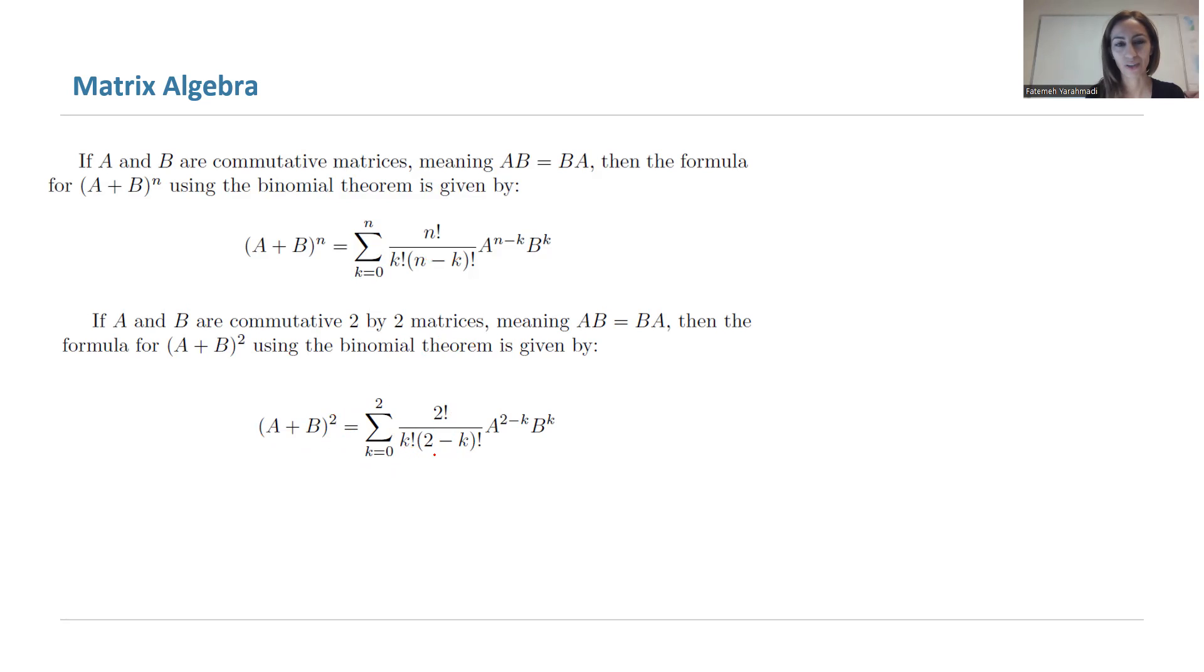divided by k factorial times (2 minus k) factorial, times A to the power (2 minus k) times B to the power k, where k ranges between 0 to 2 because these are 2 by 2 matrices.